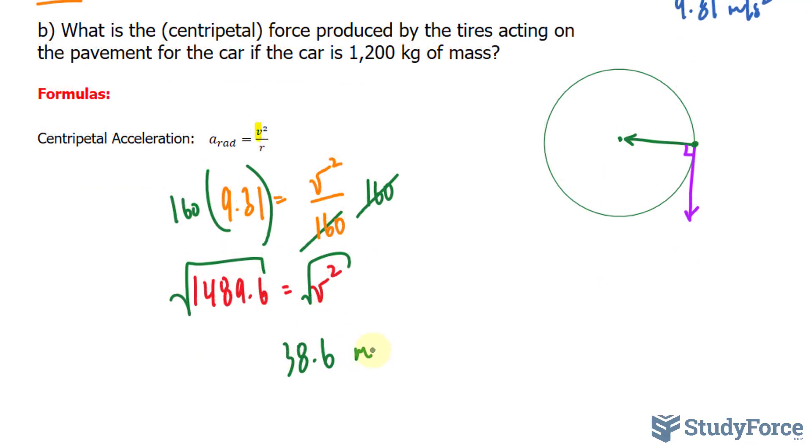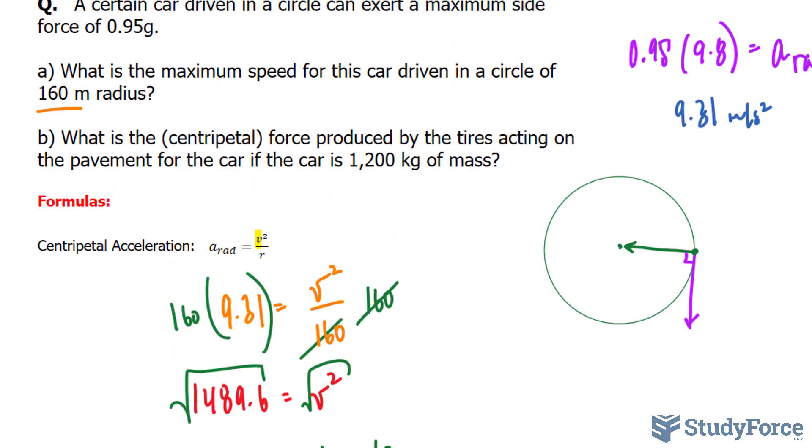In part b, we're asked: what is the centripetal force produced by the tires acting on the pavement if the car is 1,200 kilograms of mass?